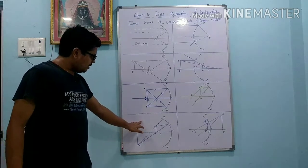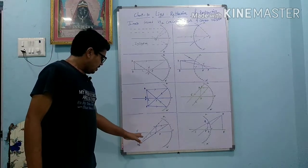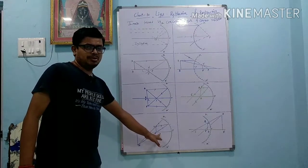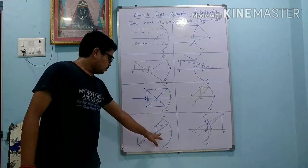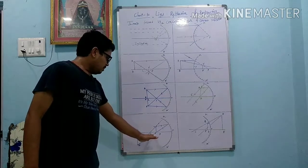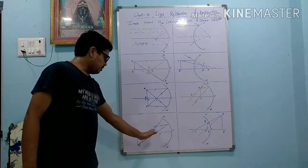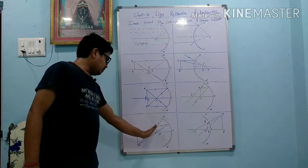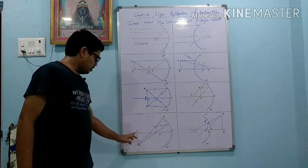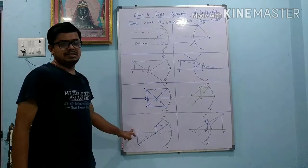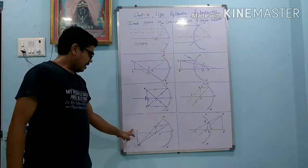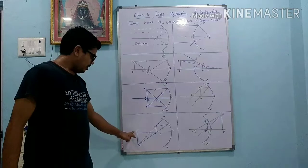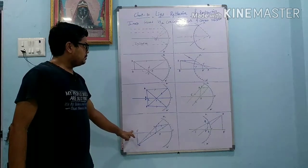Next condition: if we keep the object between the centre of curvature and principal focus, then after reflection the rays meet beyond the centre of curvature. So the image is obtained here at A'B', and you can see the image is magnified.